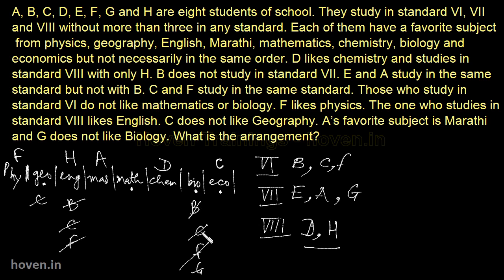Now let us see what can come in biology, maths and geography. In the case of biology, we know that B can't come, C can't come, F can't come and G can't come. A has already been fitted, B can't come here, C is already adjusted, D is already adjusted, E is left and F can't come — so E will be the one who can fit in biology.